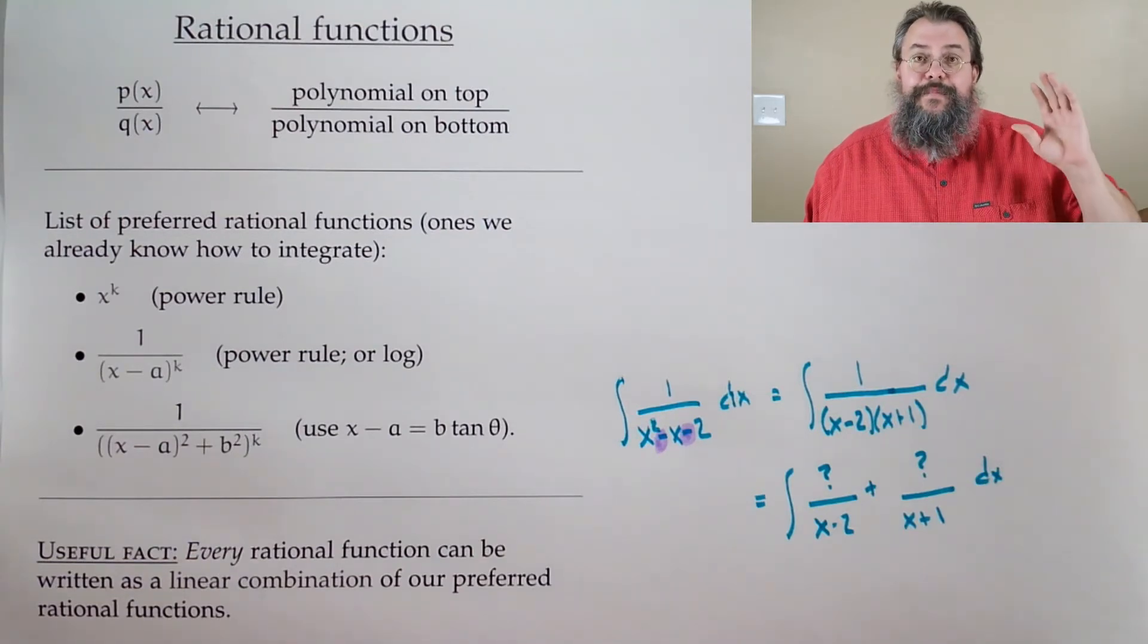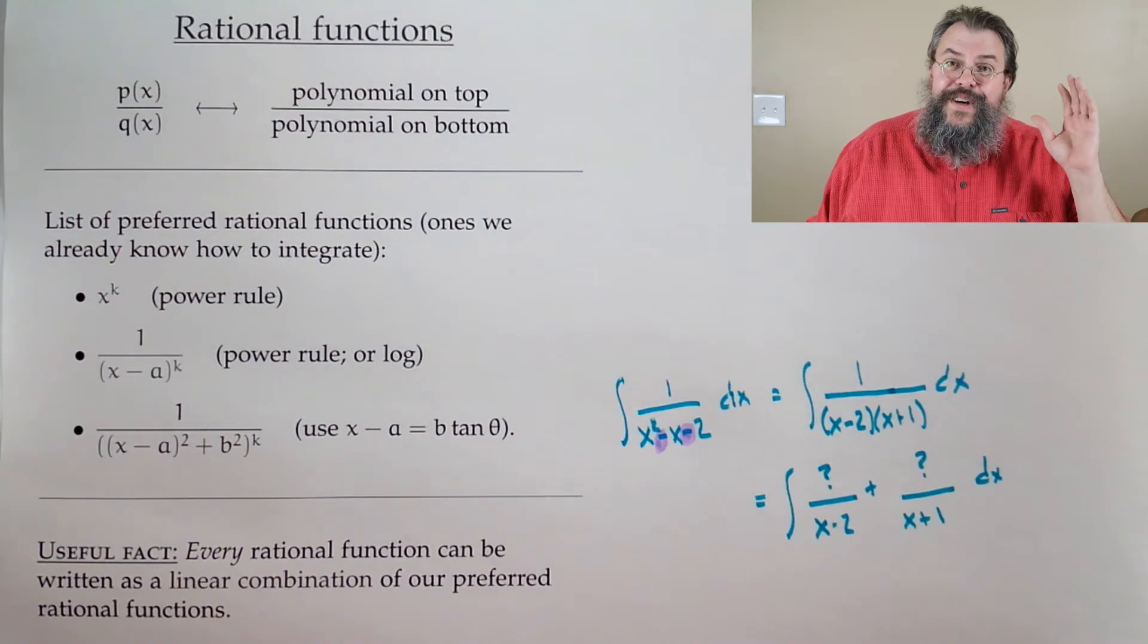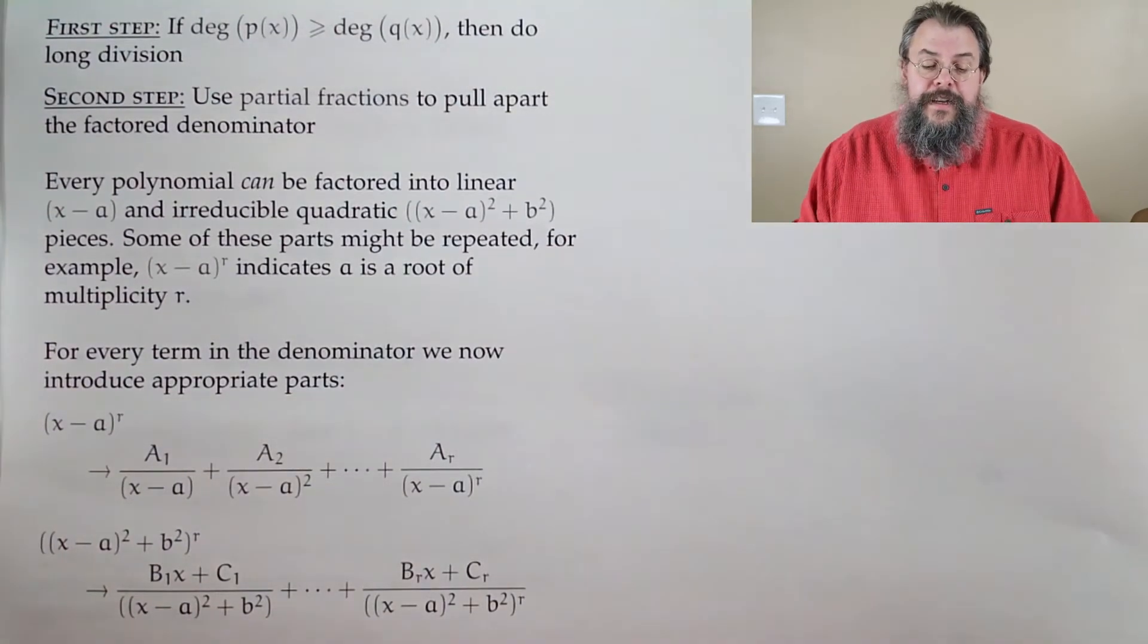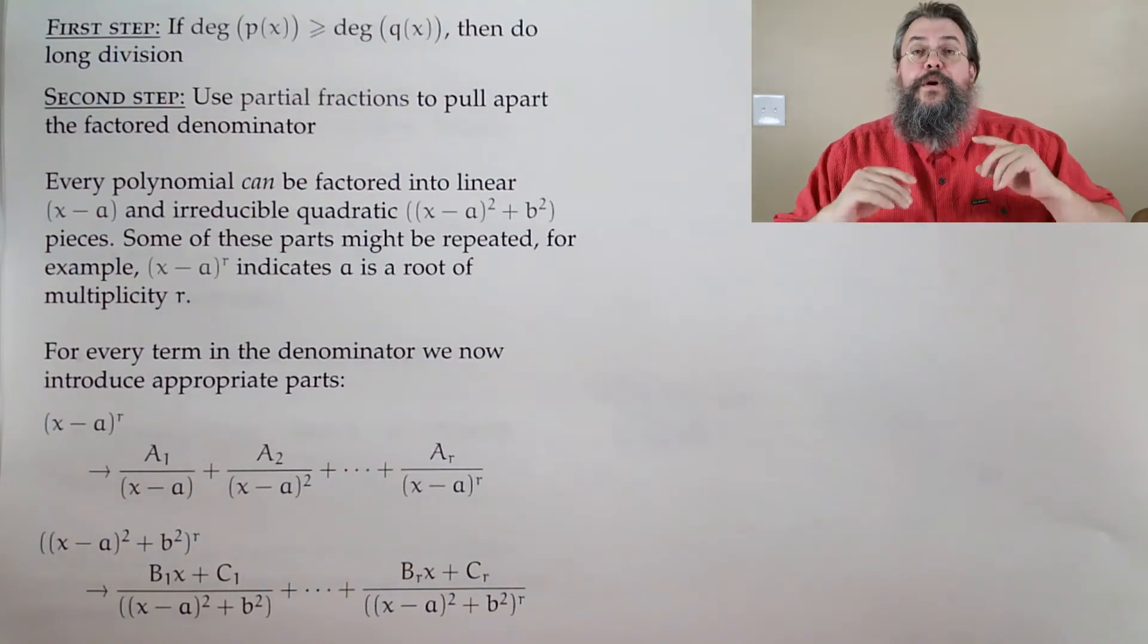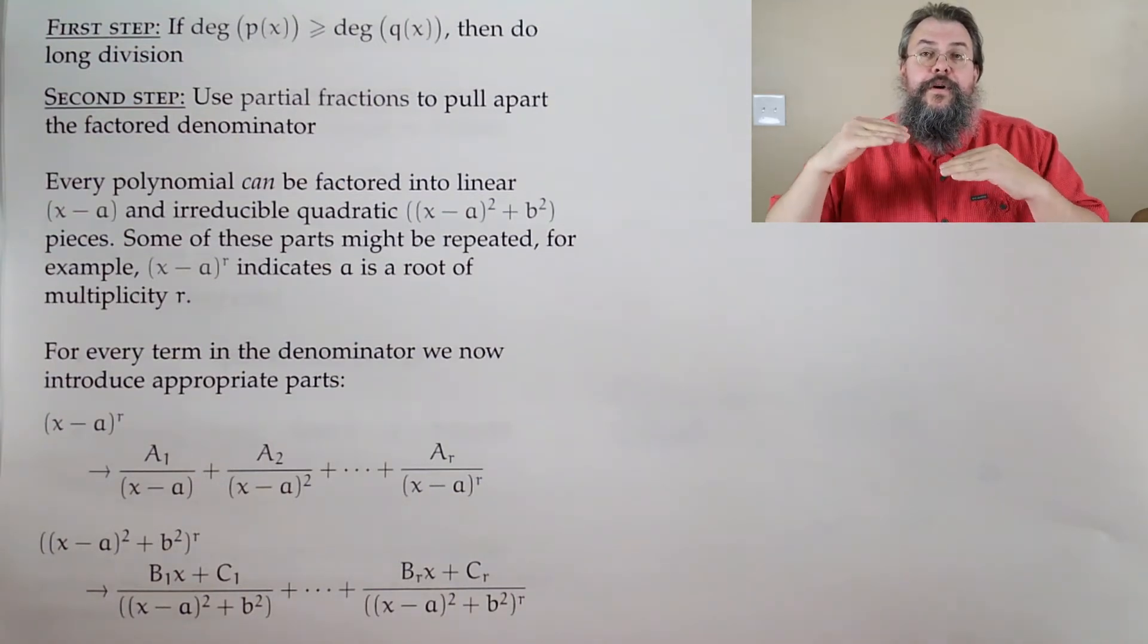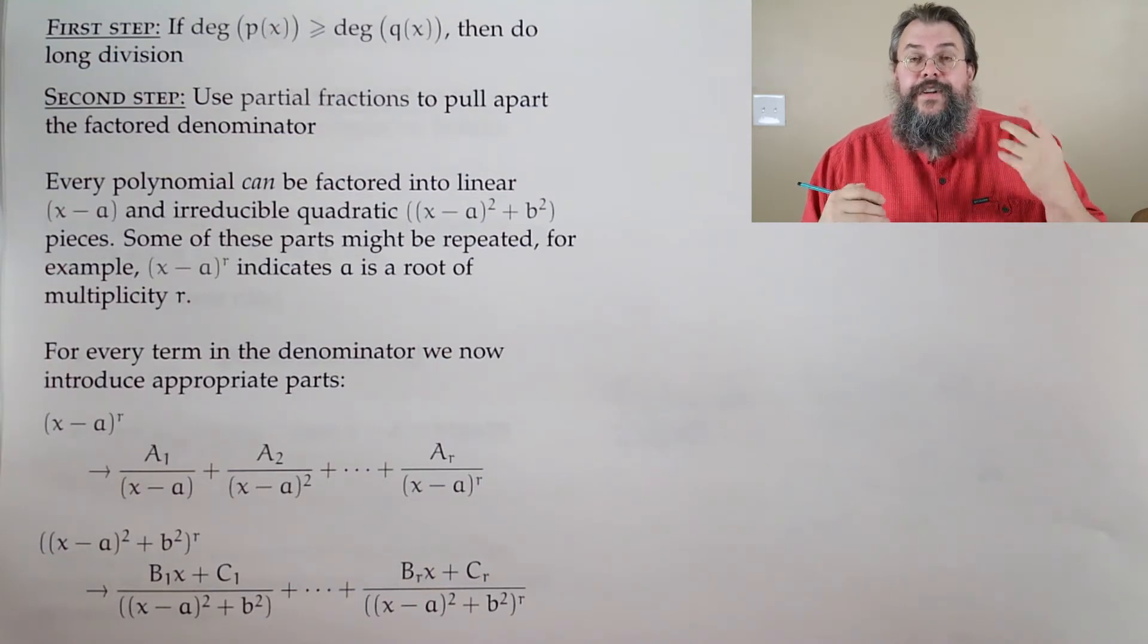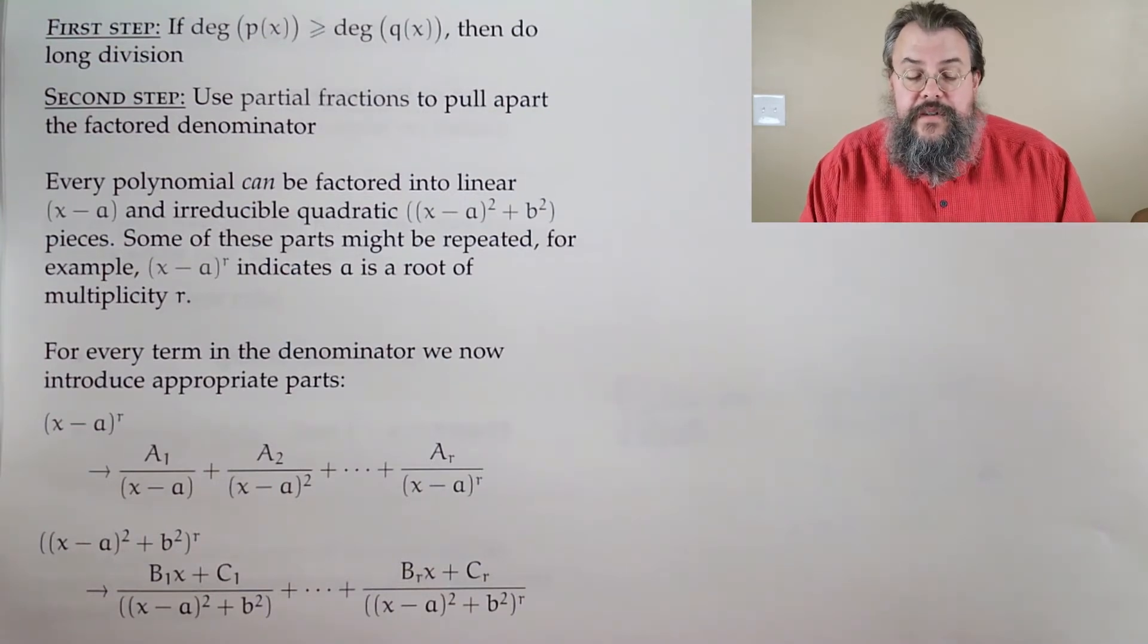Let's talk about the process. How does partial fractions work? First step: if the degree on the top is larger than or equal to the degree on the bottom, do long division. So you really want to get to the point where the degree on top is smaller than the degree on the bottom. In essence, make sure the degree downstairs is larger than the degree upstairs.